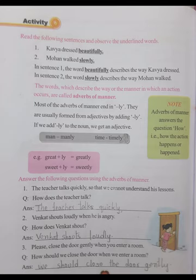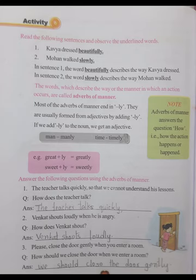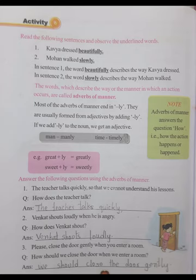Activity 6: Read the following sentences and observe the underlined words. 'Kavya dressed beautifully.' 'Mohan walked slowly.' In sentence one, the word 'beautifully' describes the way Kavya dressed. In sentence two, 'slowly' describes the way Mohan walked. The words which describe the way or manner in which an action occurs are called adverbs of manner. Most adverbs of manner end in -ly and are usually formed from adjectives by adding -ly. Note: Adverbs of manner answer the question 'how' - that is, how the action happens or happened.